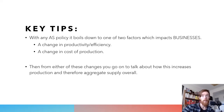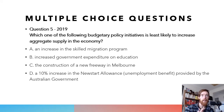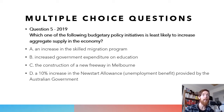With multiple choice on aggregate supply, they love to ask questions where they give you four examples of policies and ask which one is least likely to increase aggregate supply, or which has a different effect from the others. Question five from 2019: which of the following budgetary policy initiatives is least likely to increase aggregate supply? Options: an increase in skilled migration, increased government expenditure on education, construction of a new freeway in Melbourne, and a 10% increase in Newstart allowance.